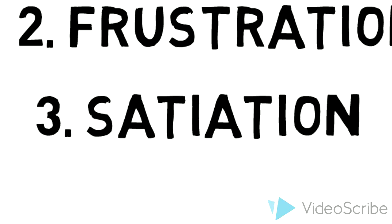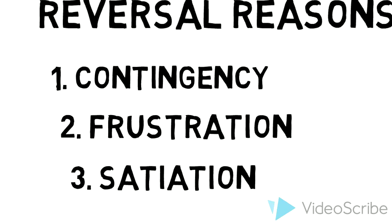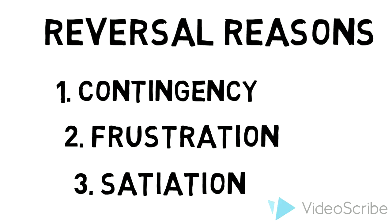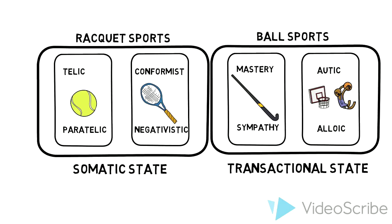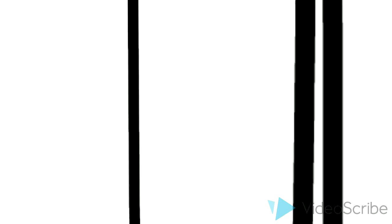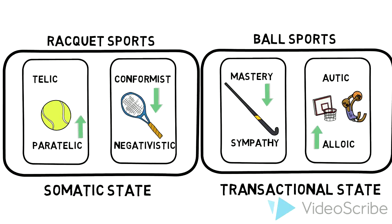Keeping these reasons in mind, we can go back to the sports venue scenario and look at the last part of reversal theory. At any given time, any of the teams can be dominant over the other team they are playing. For example, paratelic dominance with conformist dominance, and in transactional, mastery dominance and aloic dominance. Each individual has a naturally dominant state for each of the pairs, in the same way that some teams are naturally stronger than their opponents.